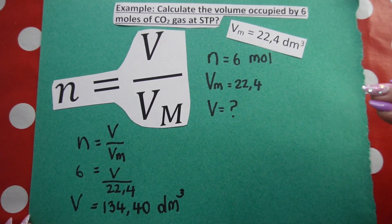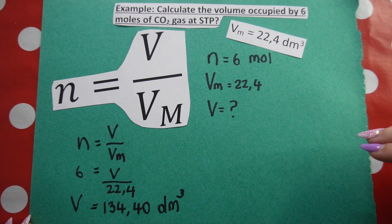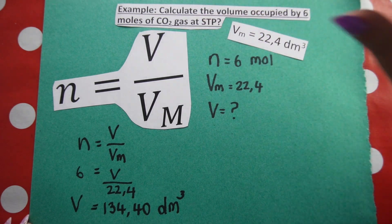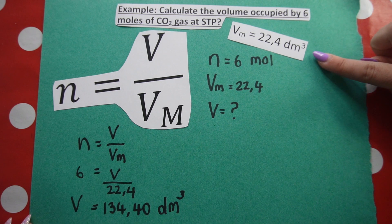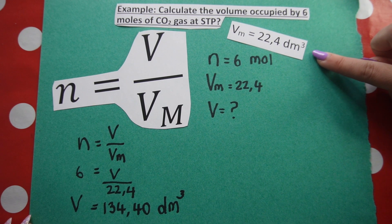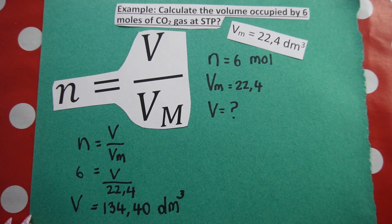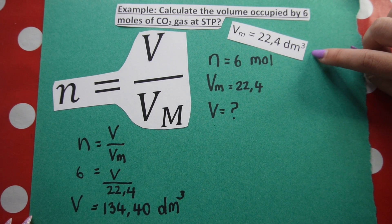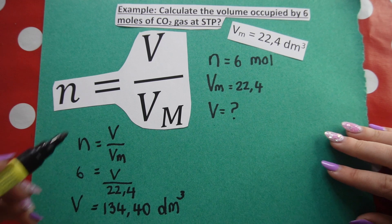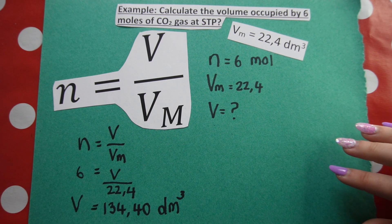Now take note, if they did not mention that you need to calculate the volume at STP, they need to provide you with the molar volume. It may not be 22.4 cubic decimeters because it won't be at standard temperature and pressure. If they quote molar volume in cubic centimeters, then if you use this formula, your answer will also be in cubic centimeters.